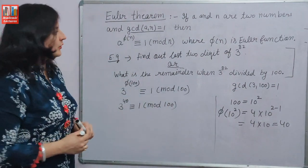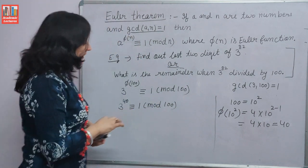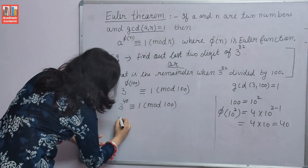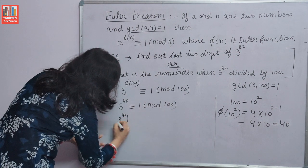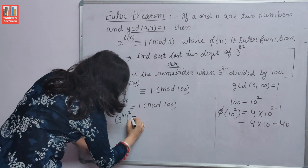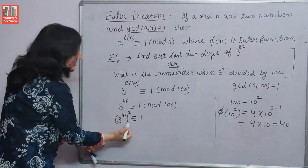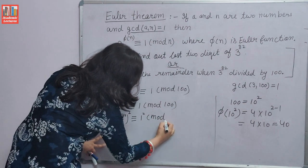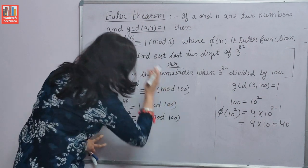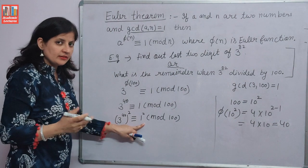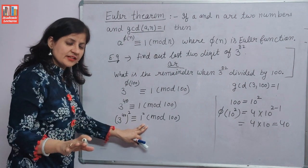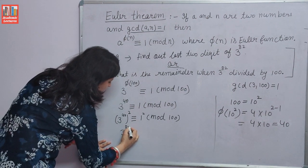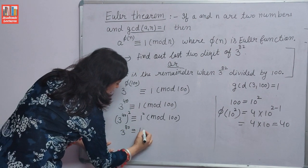But we need the value of 3 raised to the power 82. We square the result: 3 raised to the power 40 squared gives 3 raised to the power 80, which is congruent to 1 modulo 100 (since 1 squared is still 1).